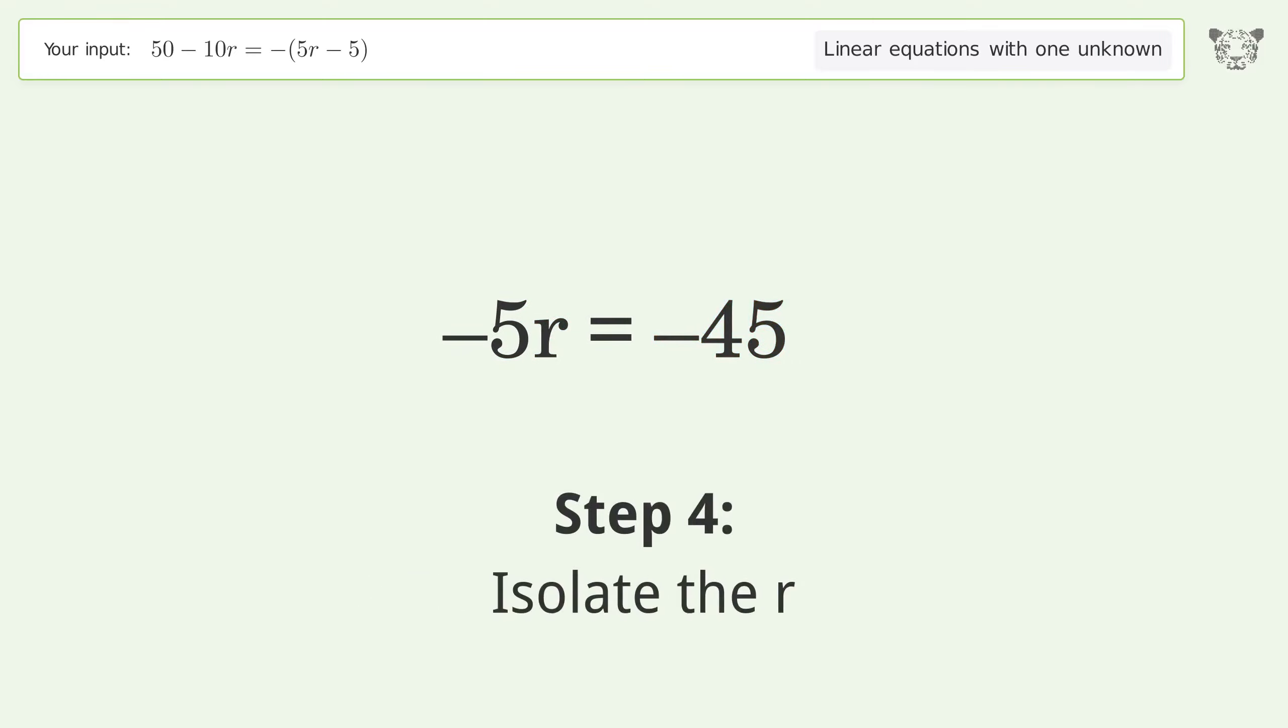Isolate the r. Divide both sides by negative 5. Cancel out the negatives.